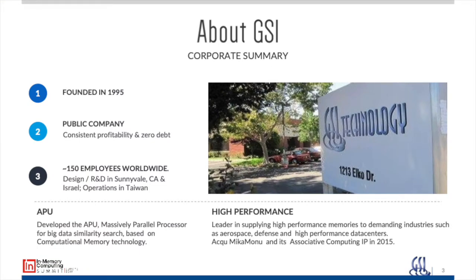GSI is a public company headquartered in Sunnyvale, California with 150 employees. GSI developed SRAM memory chips, and in 2015 they acquired my company Mika Mono, where we developed associative technology. We found a way to convert SRAM or any type of memory to do compute in the memory. We take standard memory and convert it to compute using just two basic instructions: read and write. It was a good merge — GSI as an SRAM company combined with our IP on converting memory to high-speed computing, resulting in a chip and software solution for in-memory compute.